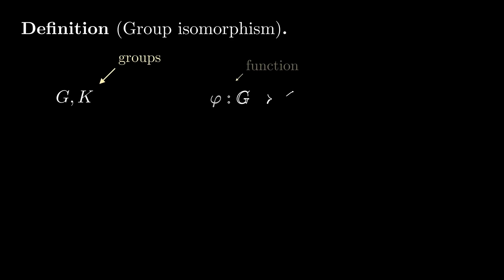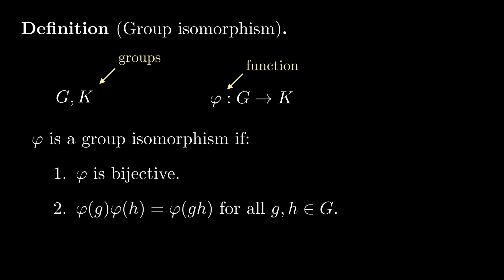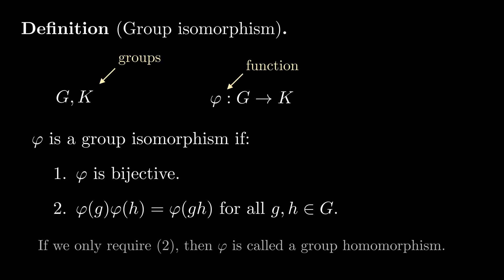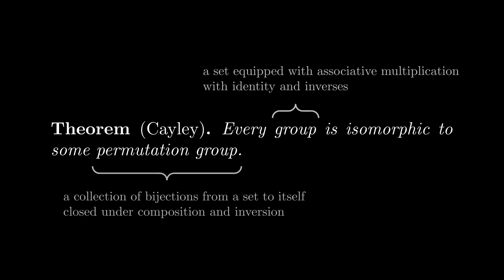In this case, we say that our two groups are isomorphic, and we call phi an isomorphism. Let's state this in mathematical language. Given two groups g and k, a map phi from g to k is called a group isomorphism if it's bijective and satisfies phi(g) times phi(h) equals phi(gh), for all g and h in g. If we remove the condition that phi is a bijection, then we call phi a group homomorphism. So what Cayley's theorem is really saying is that given any group g, there exists a permutation group which is isomorphic to g.